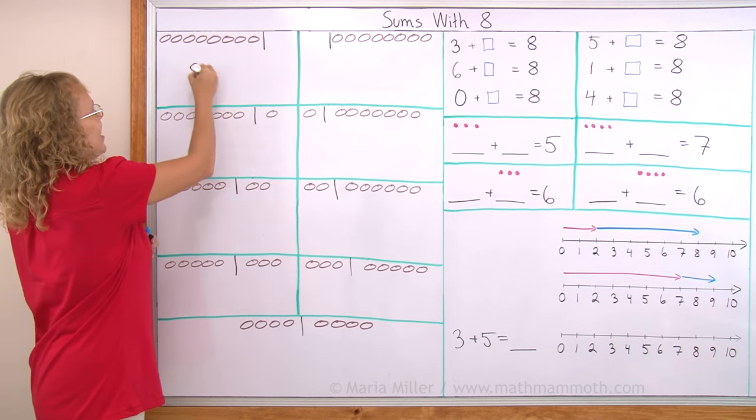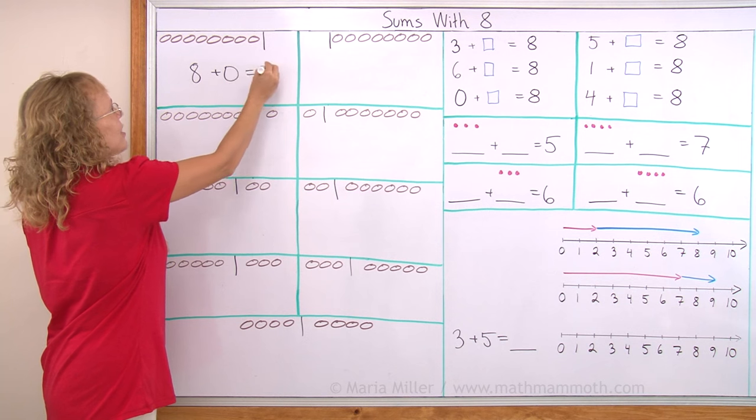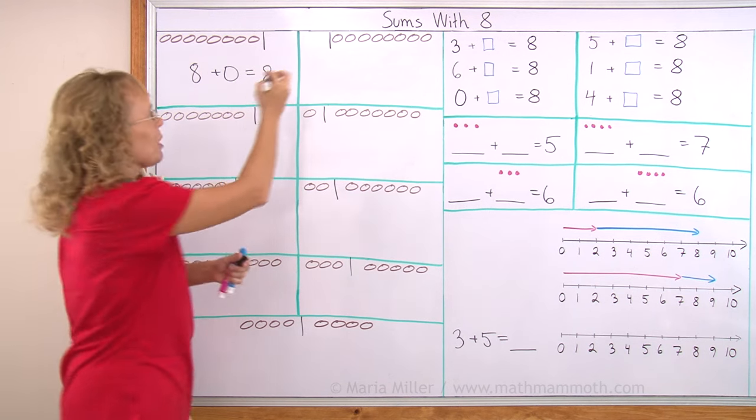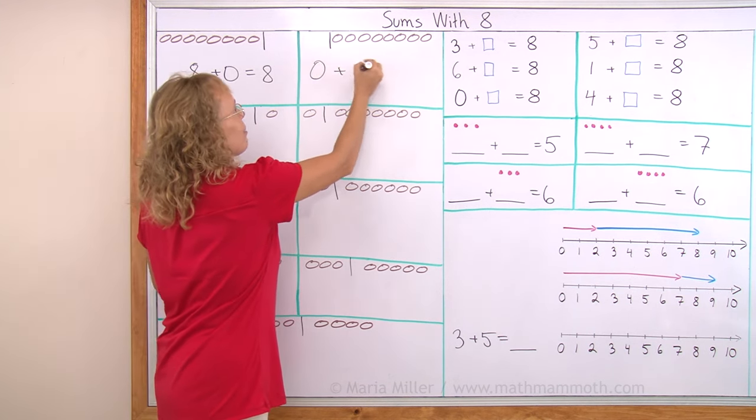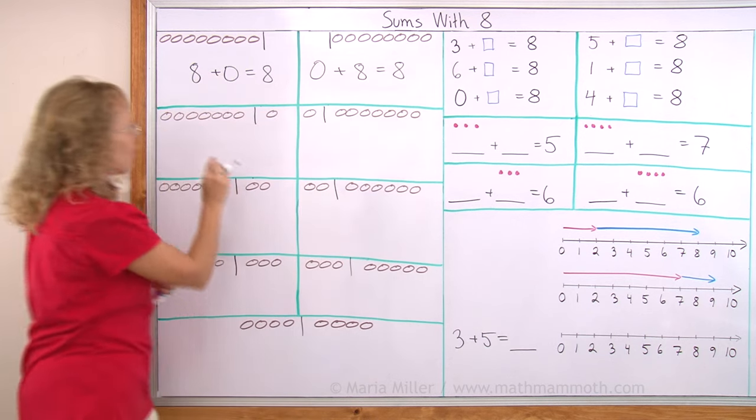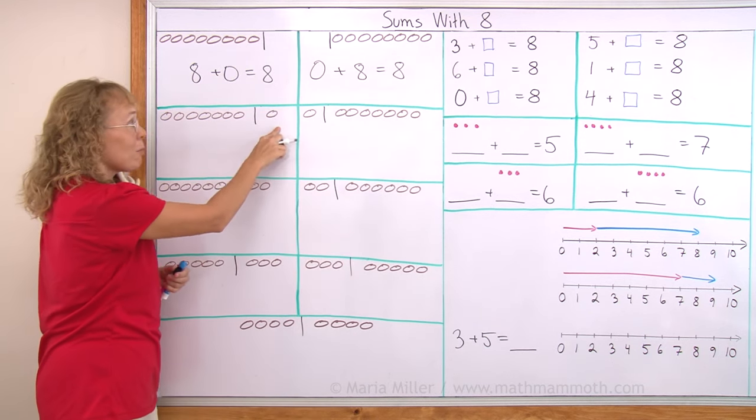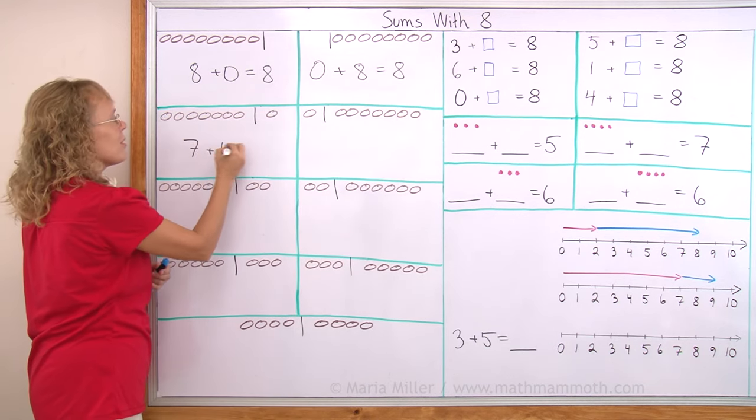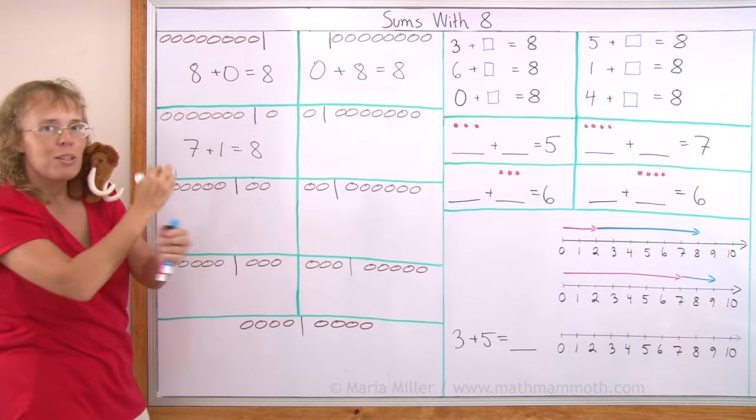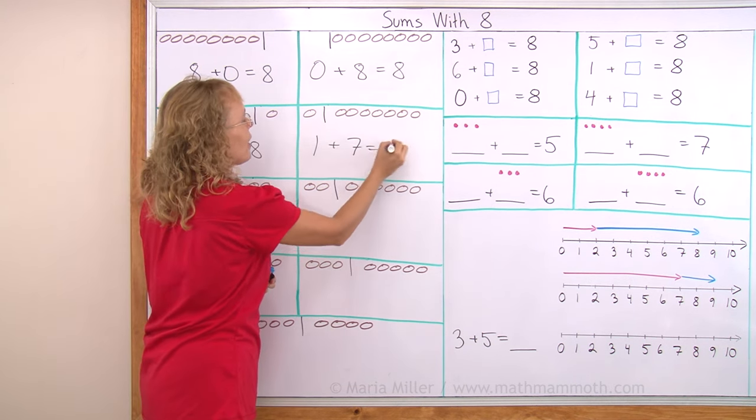8 on this side and 0 on the other makes 8. Then we flip, we have 0 and 8 makes 8. And over here, how many here and 1? 7 and 1 makes 8. Or the other way around, 1 and 7 makes 8.